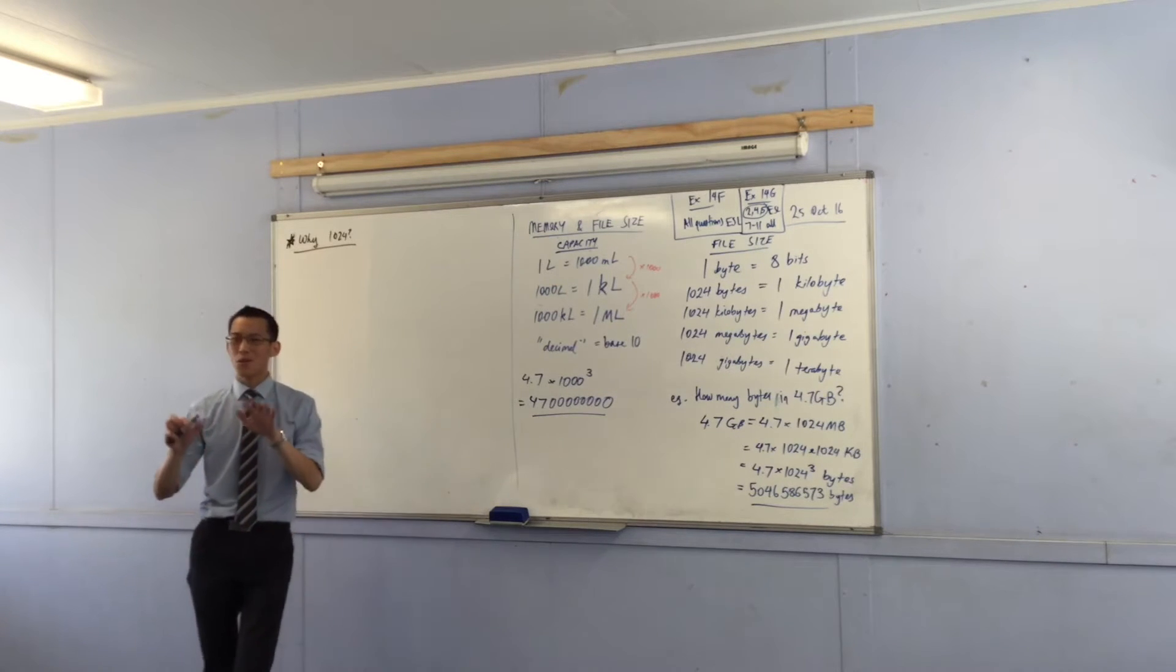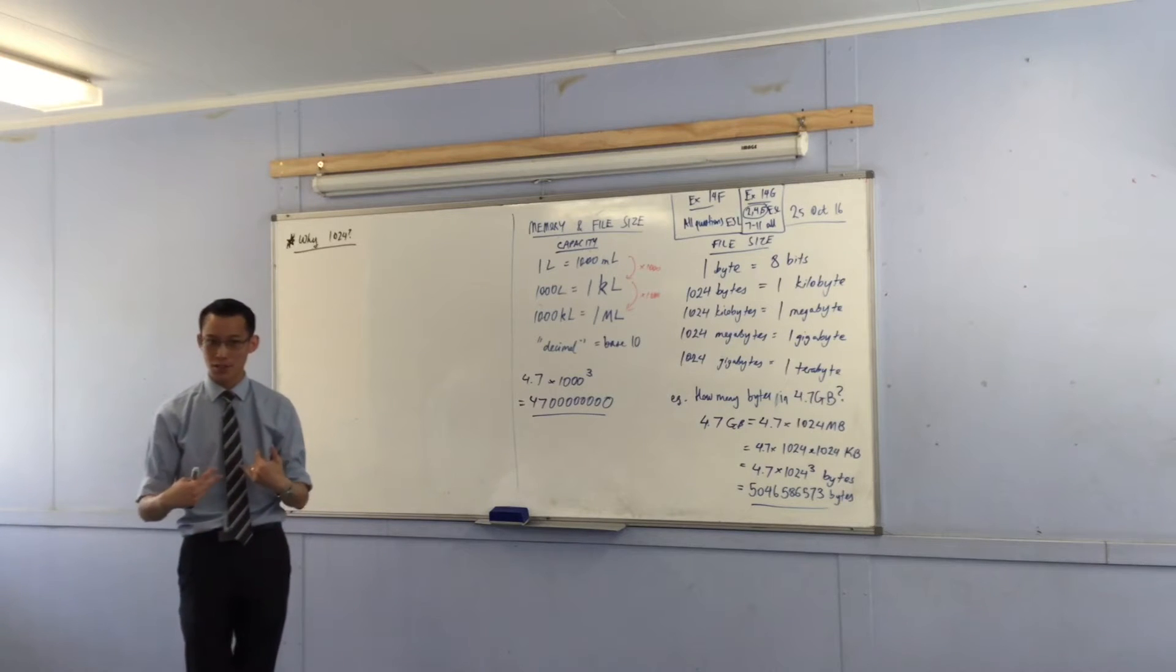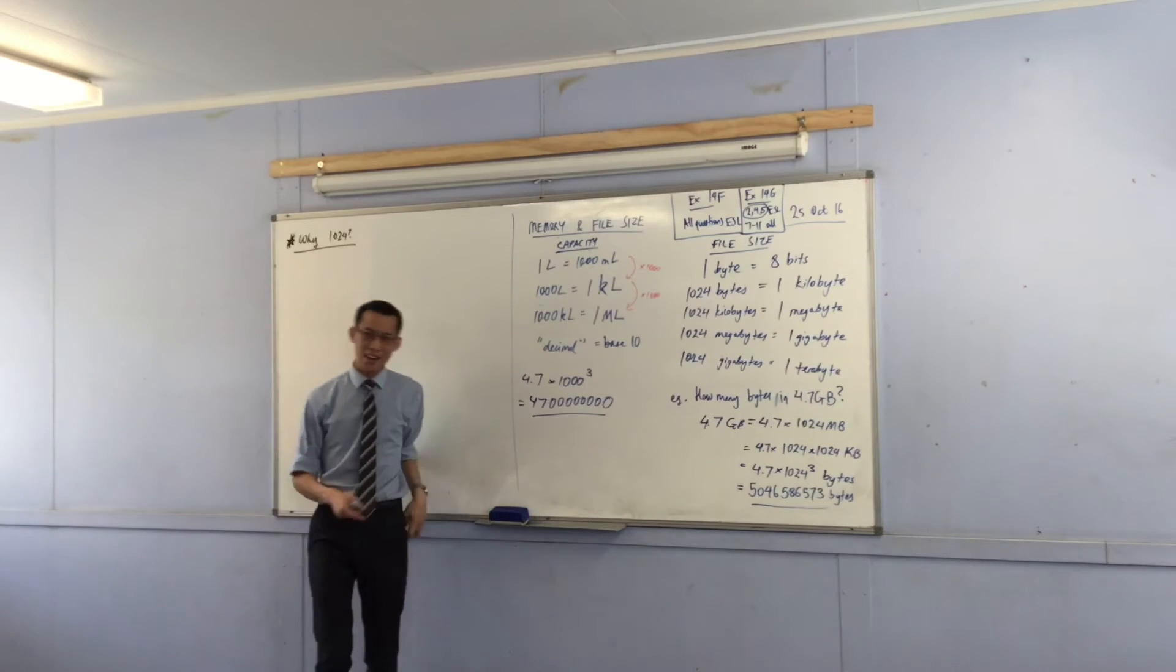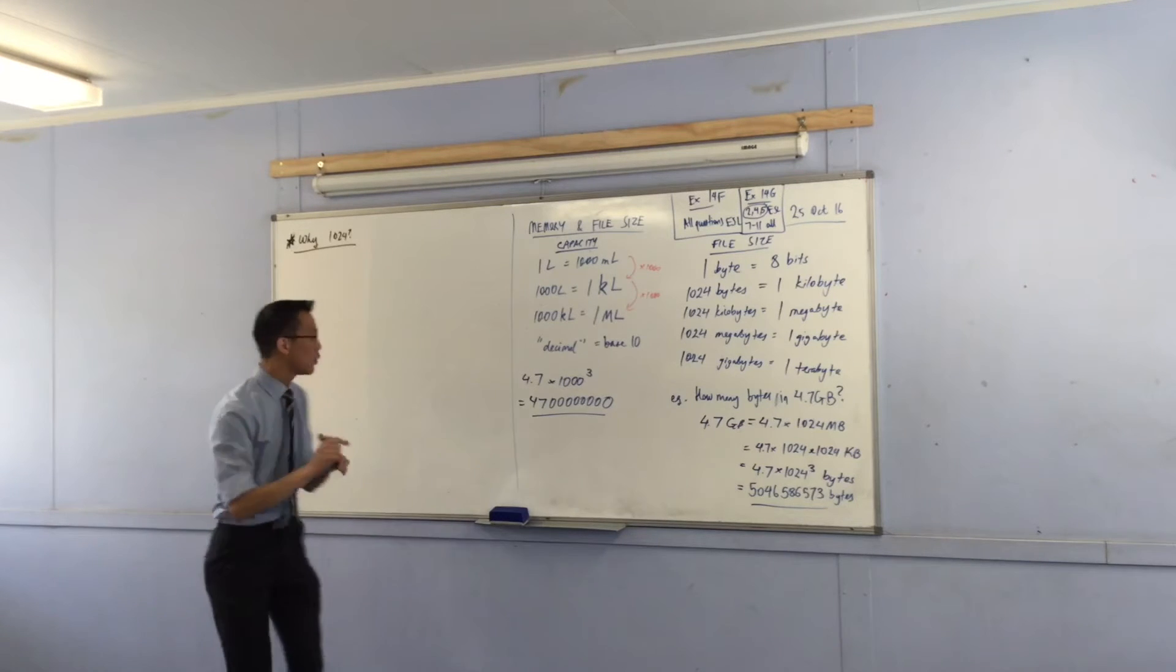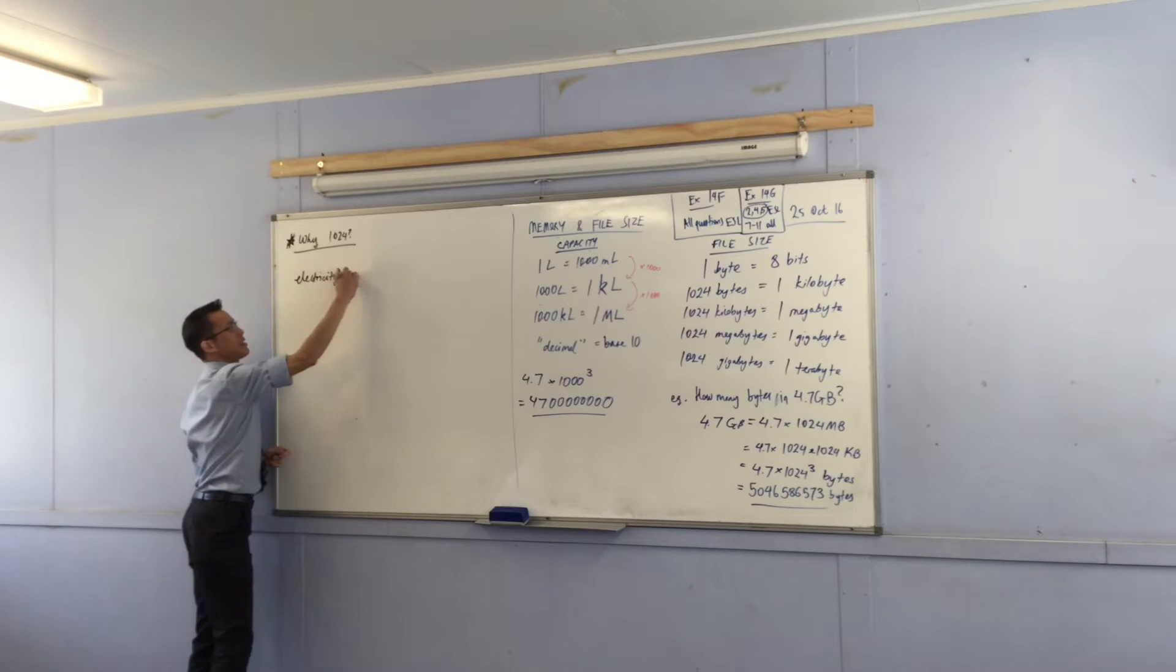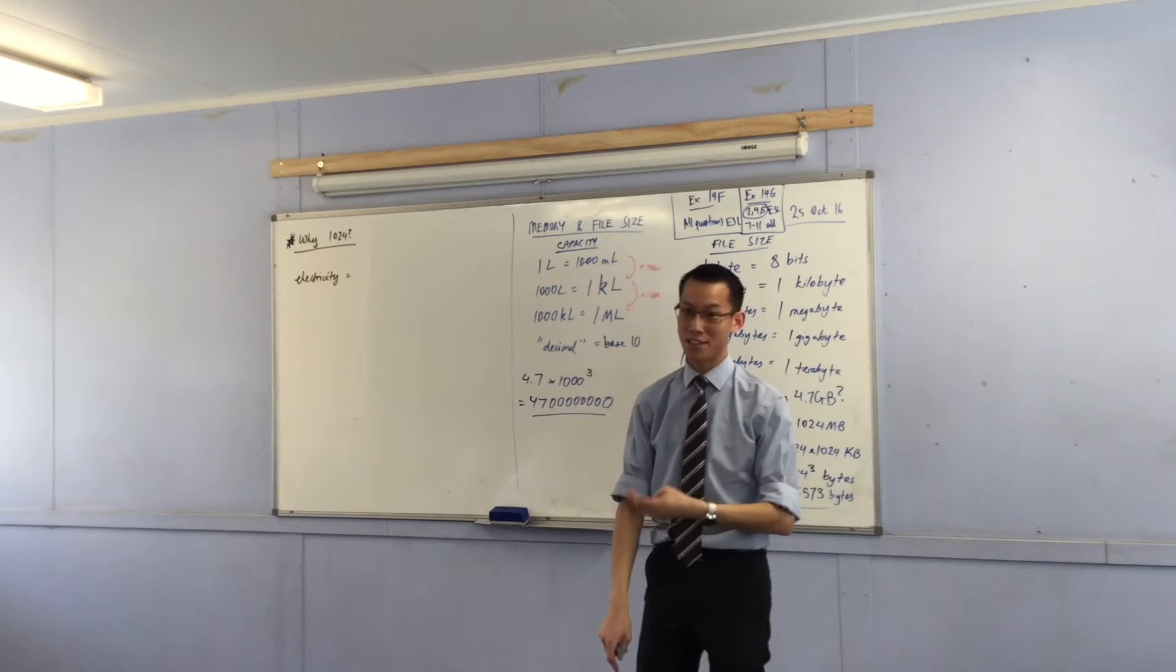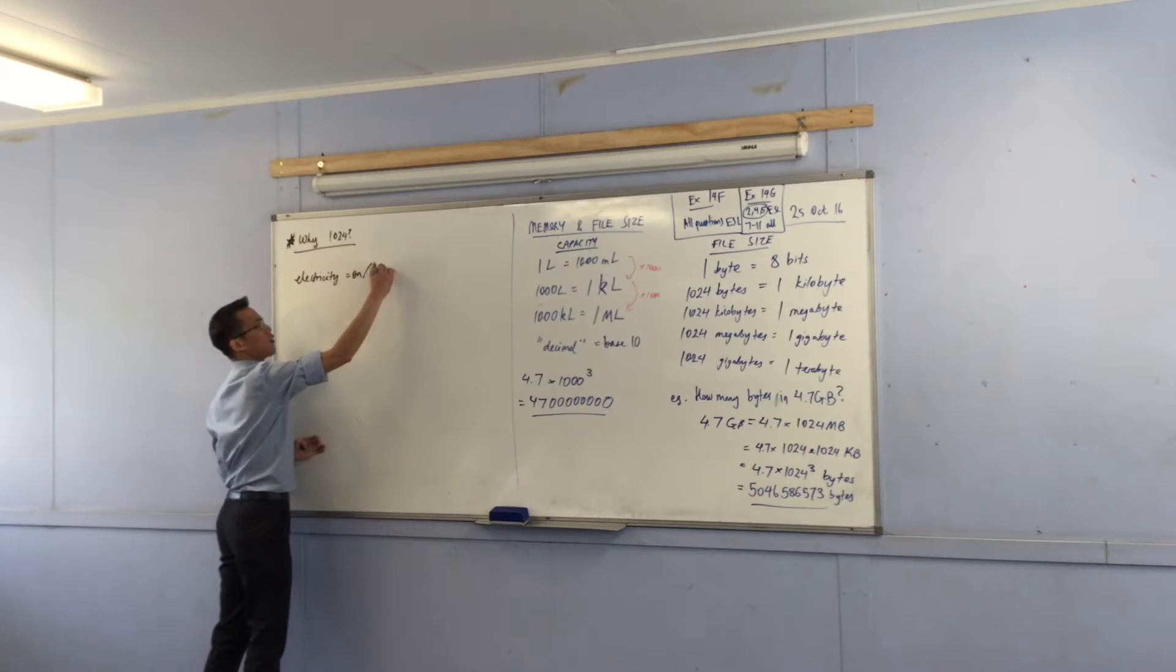Now we have a base 10 system. It works great for us but it doesn't work so great for computers. The reason why is computers don't have fingers to count on. Computers only work on electricity which is either on or it's off. There's electrical current flowing through a wire or there's no electrical current. So it's on or off.